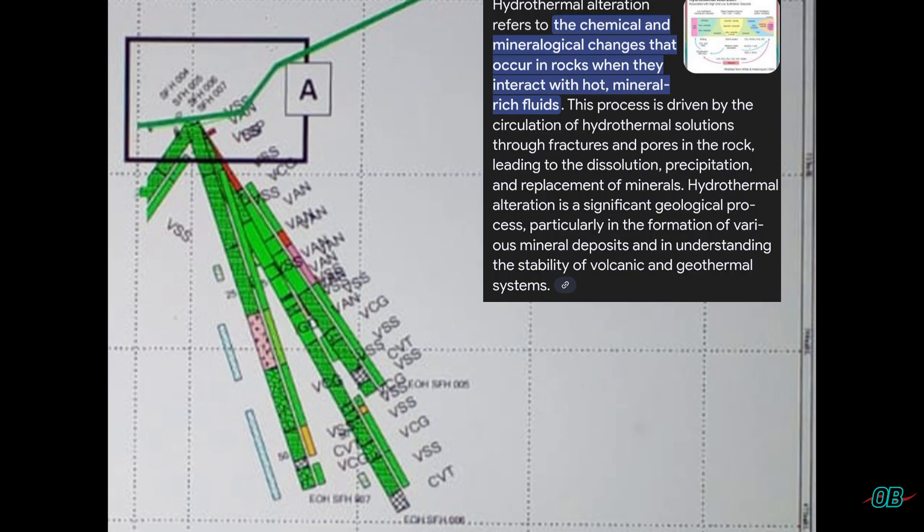Hydrothermal alteration relates to the chemical and mineralogical changes. These are two constituents of a rock, and this is as a result of hot fluids such as water, magma.